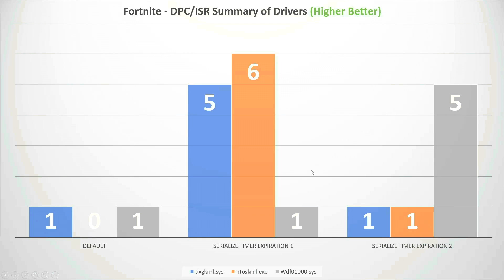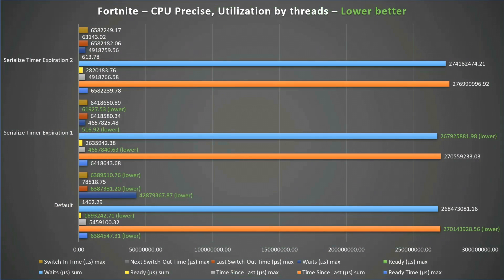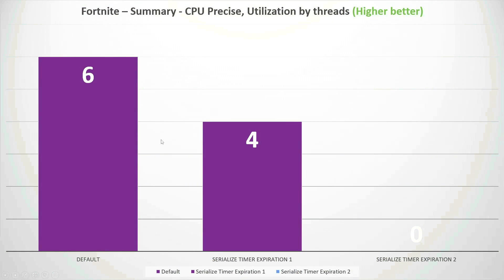For CPU precise results, by default things are better — the serialized timer expiration shows some improvement at value one, but serialized timer expiration value two shows zero improvement. Most metrics are better by default, while four metrics are better with serialized timer expiration value one.